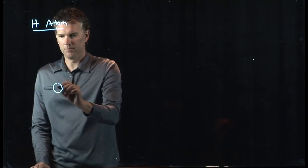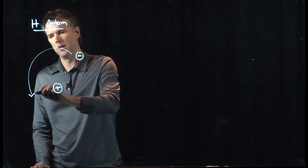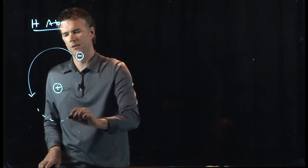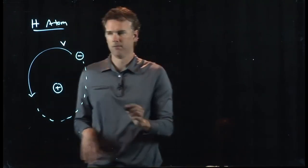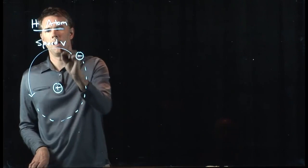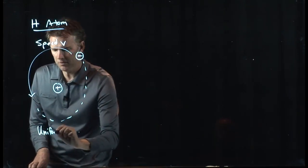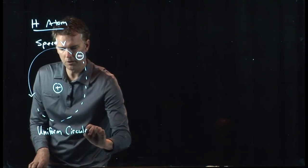So what does a hydrogen atom look like? It looks like this: positive charge, negative charge, electron swirling around the proton at a speed v.